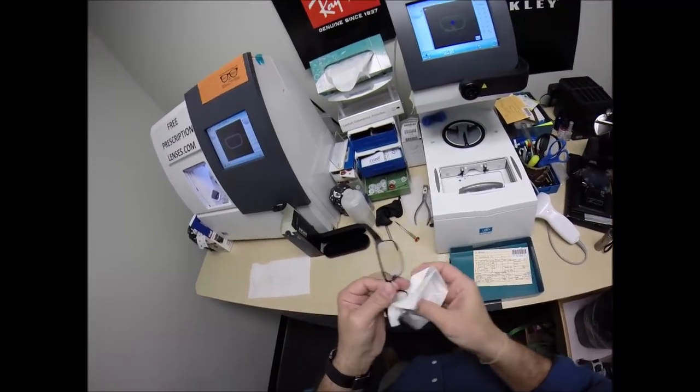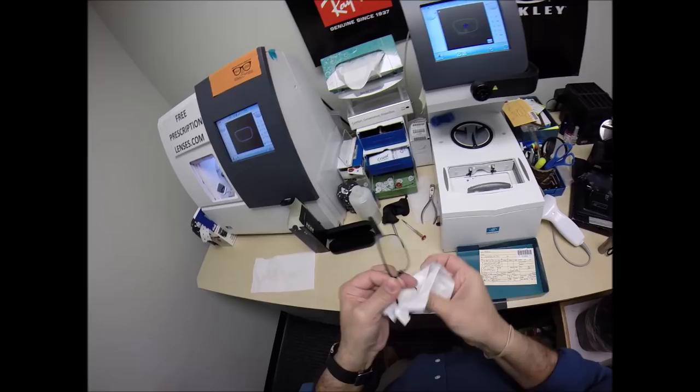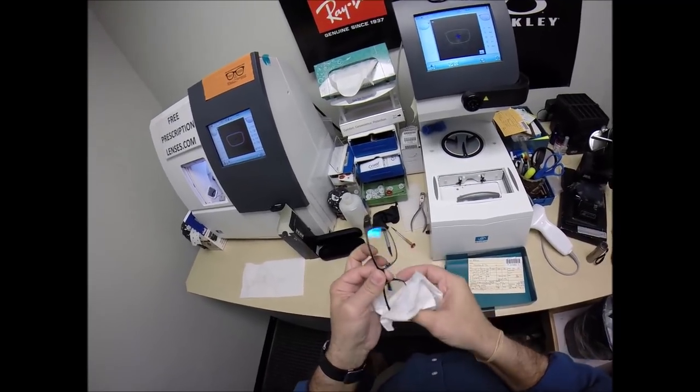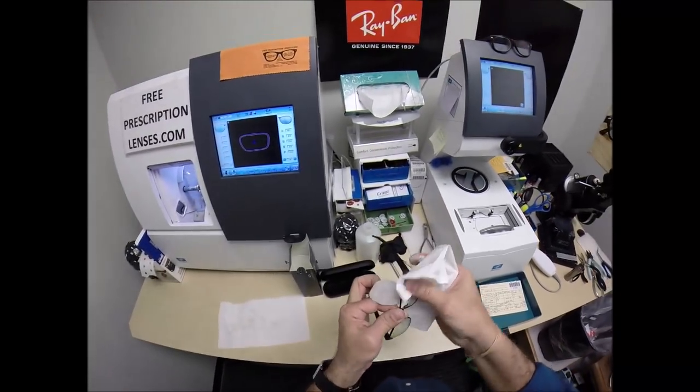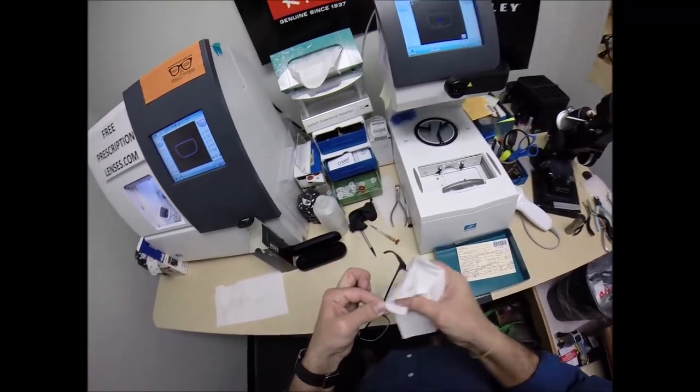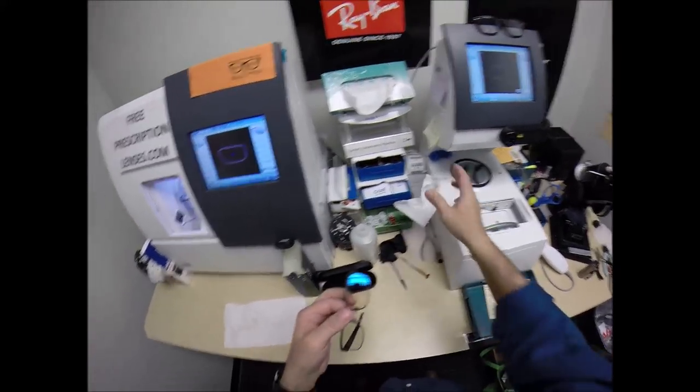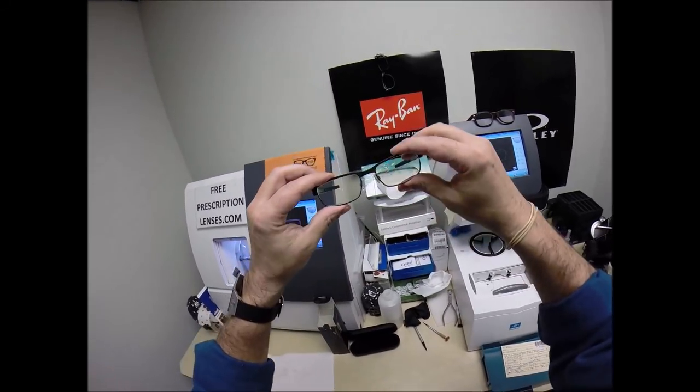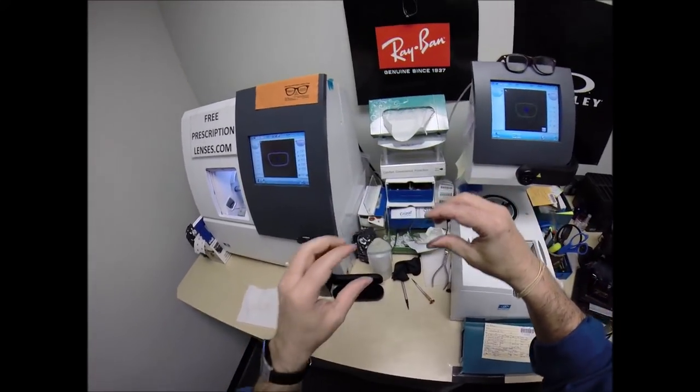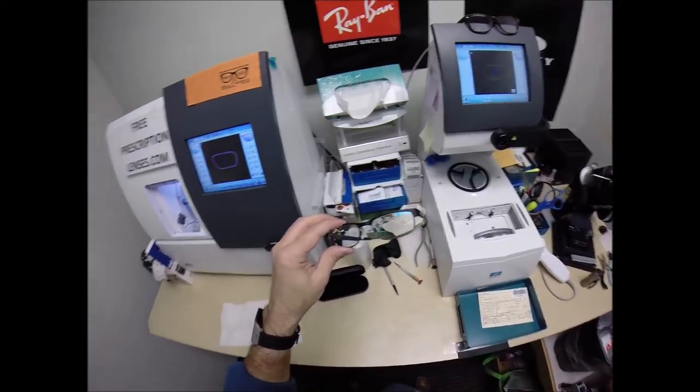But because of that statistic, 99% of all optical shops will do free adjustments if you ask them. So just stop by your local place and tell them if it's too loose or too tight or high on one side. They'll know what to do. It only takes about 30 seconds to a minute to adjust a pair of glasses perfectly.